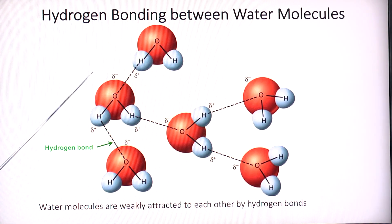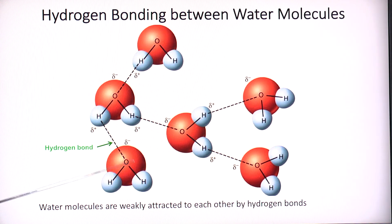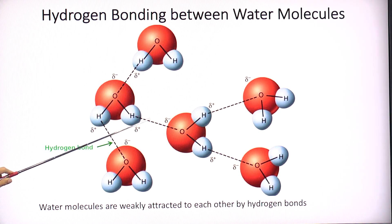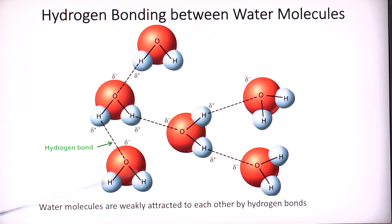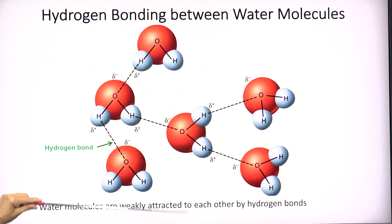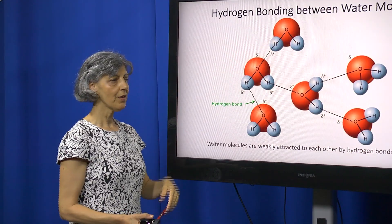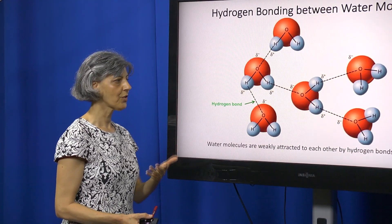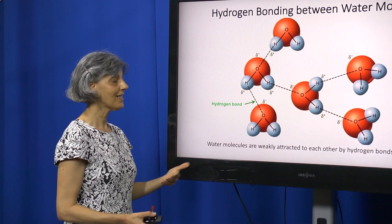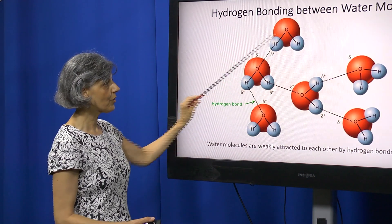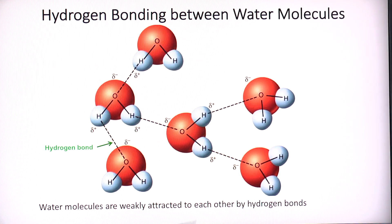Here we see hydrogen bonding between multiple water molecules — hydrogen bonds holding them together to make a body of water. This is very important for cohesiveness. It allows water to form an uninterrupted film in many areas of our body, such as the film of tears that covers the surface of our eyes. The water molecules hold together and stay tight because of these hydrogen bonds.